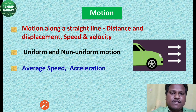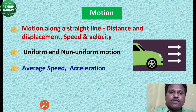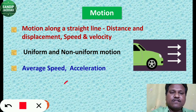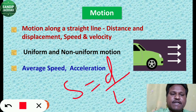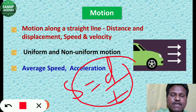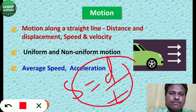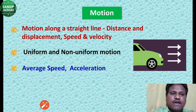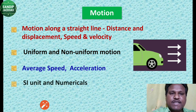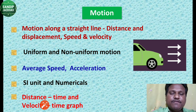The basic relation is speed equals distance divided by time. If speed is changing, we need to find the acceleration, which defines uniform and non-uniform motion. This chapter also covers SI units and numericals for all these basic quantities.